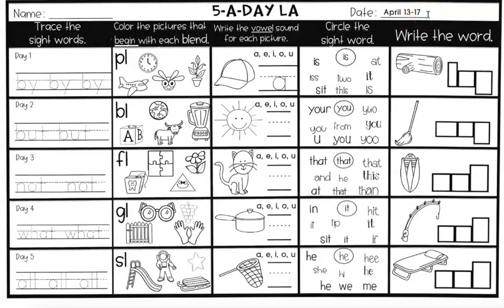For the first part of each day, you're going to trace the sight word. This first sight word is BY. You're going to try to use your best handwriting to actually trace it — BY — and you're going to do it three times.